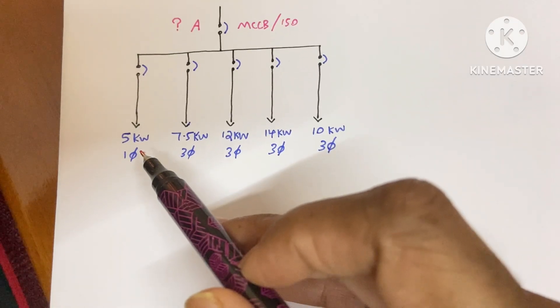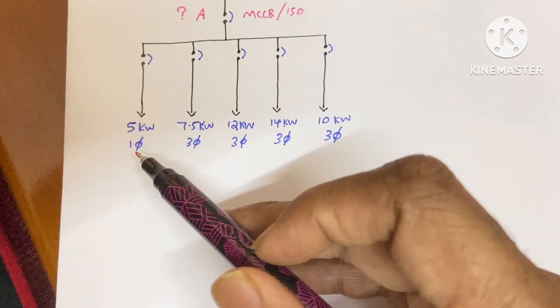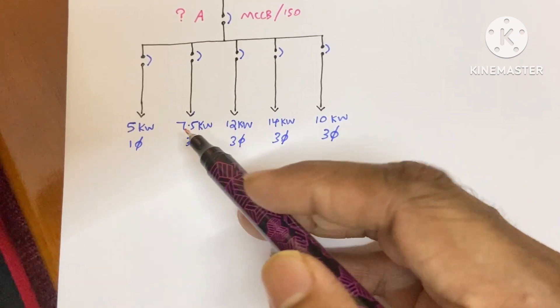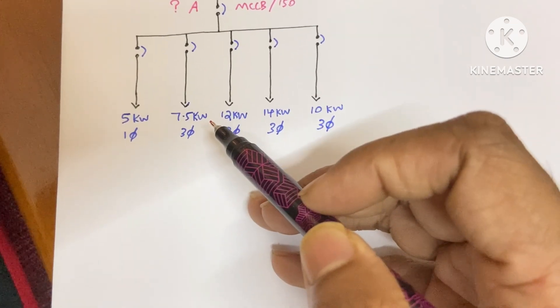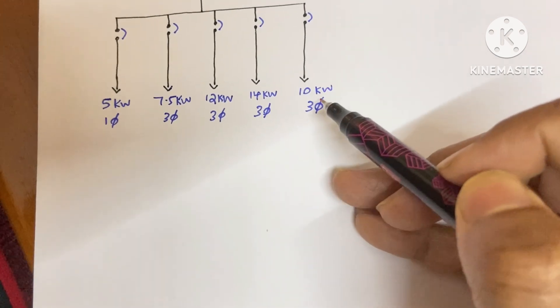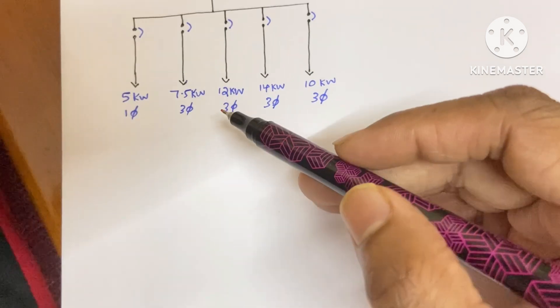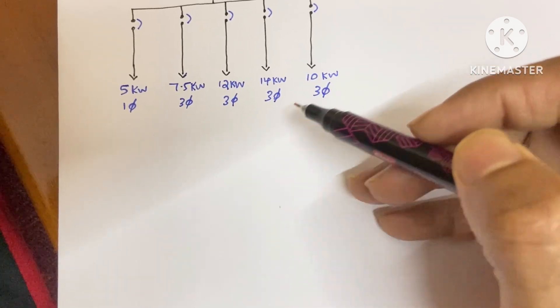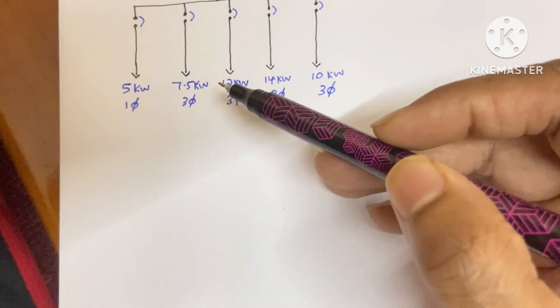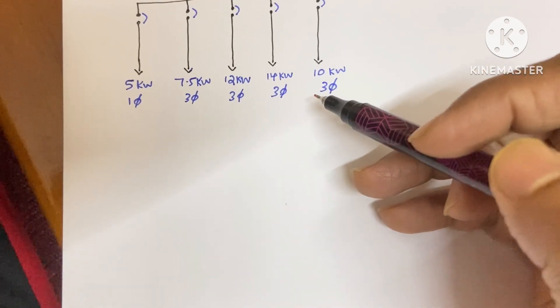Here we have different motor loads. One is 5 kilowatt single phase, the second one is 7.5 kilowatt three phase, and these are all different types of three phase motor loads. It could be any extract fan or makeup fan or any pump.